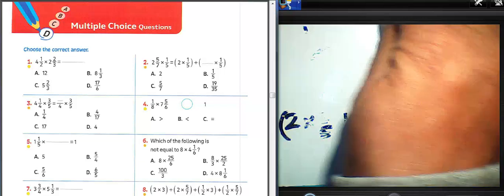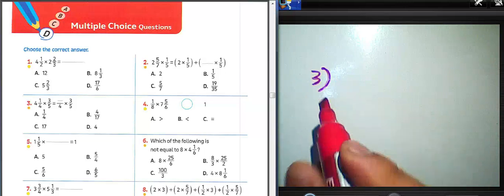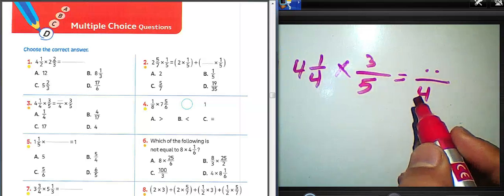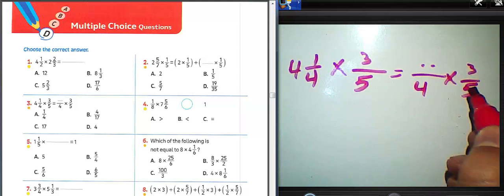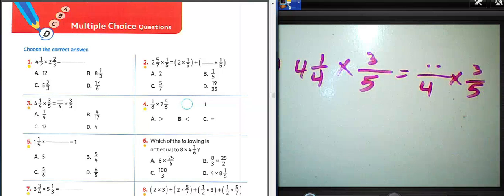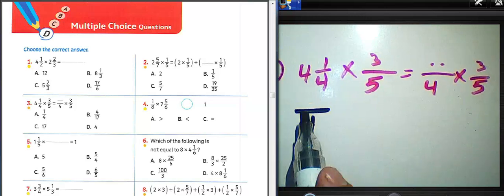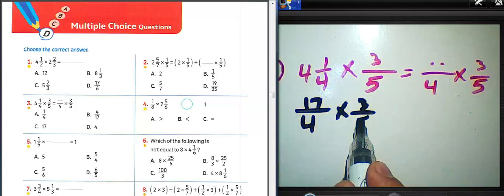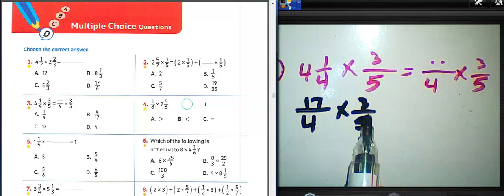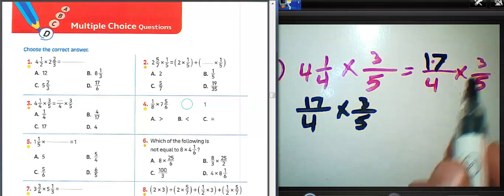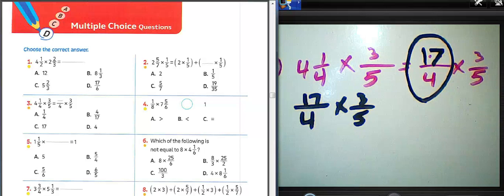Question number three: four and one over four, multiply by three over five. We use the distributive property here. We must find the result first: four times four equals sixteen, sixteen plus one equals seventeen. So we have seventeen over four times three over five. Multiply the numerators: seventeen times three.